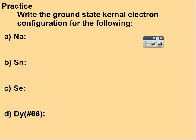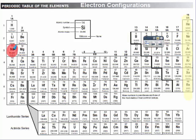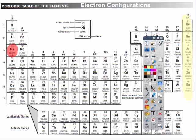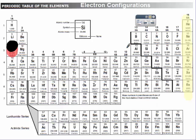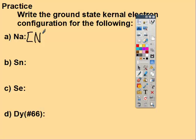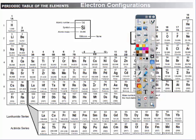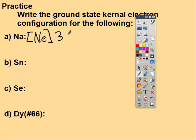So sodium is here. We look back and the noble gas that comes before sodium, number 11, would be neon. So neon goes in brackets and then we start reading from neon. So here's neon, this is 3s1. And that's your shorthand configuration.